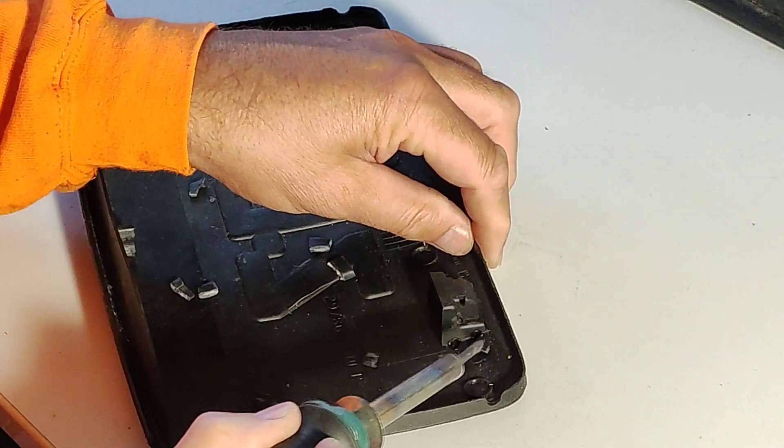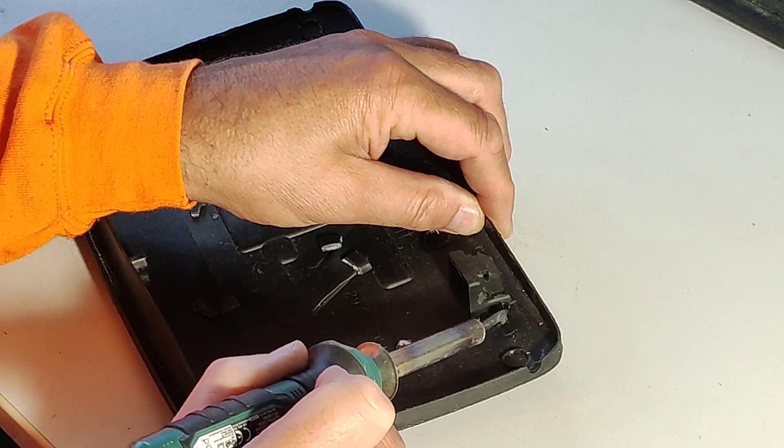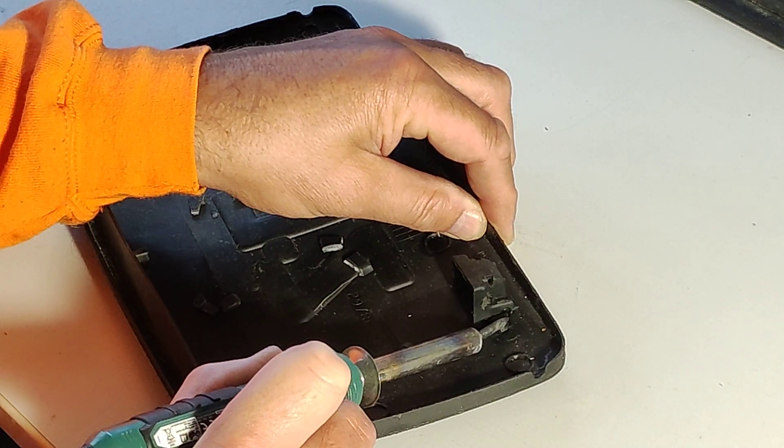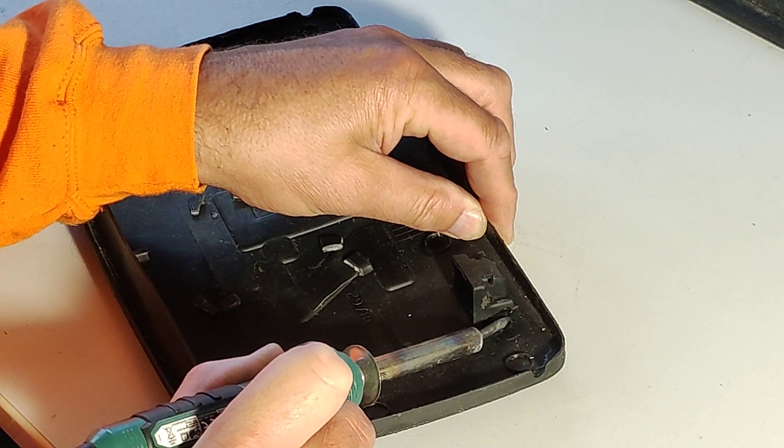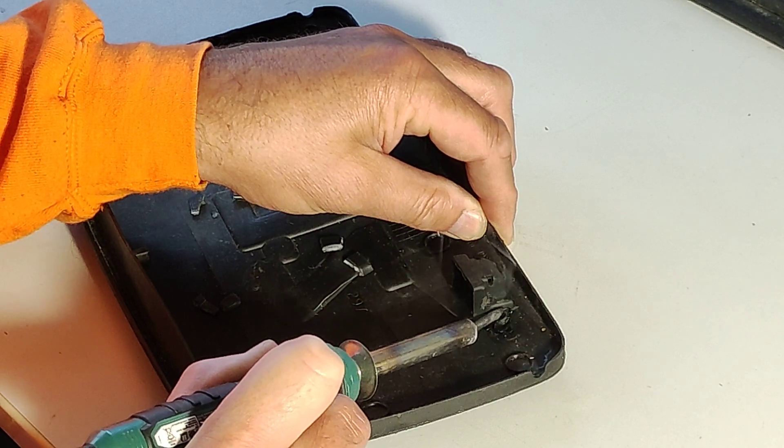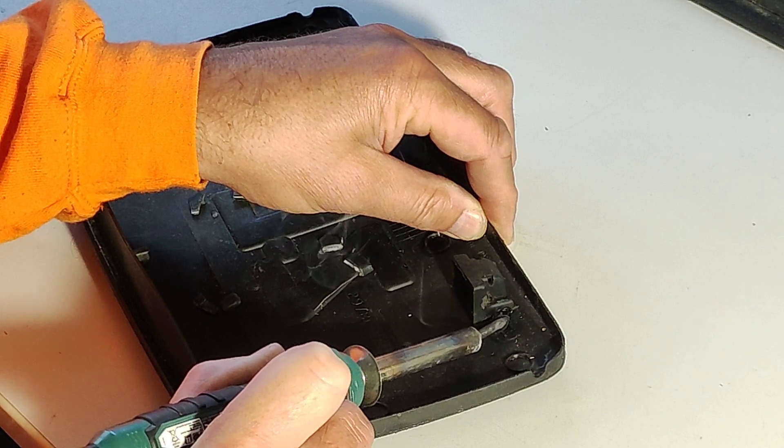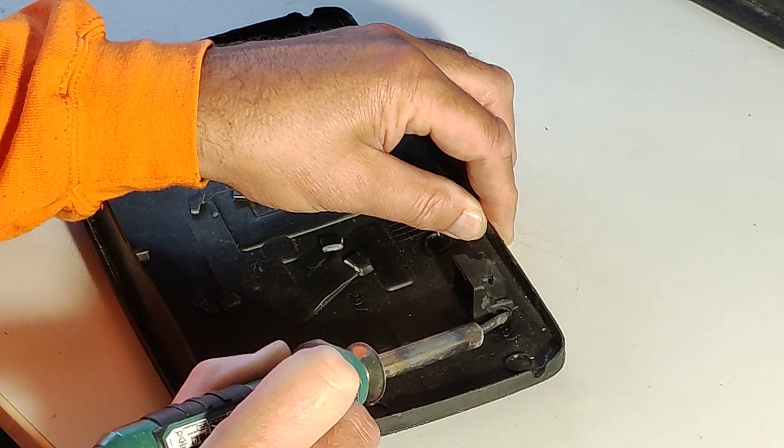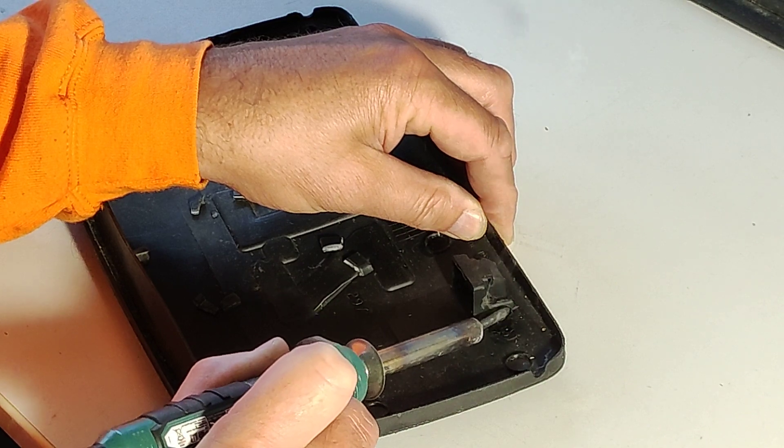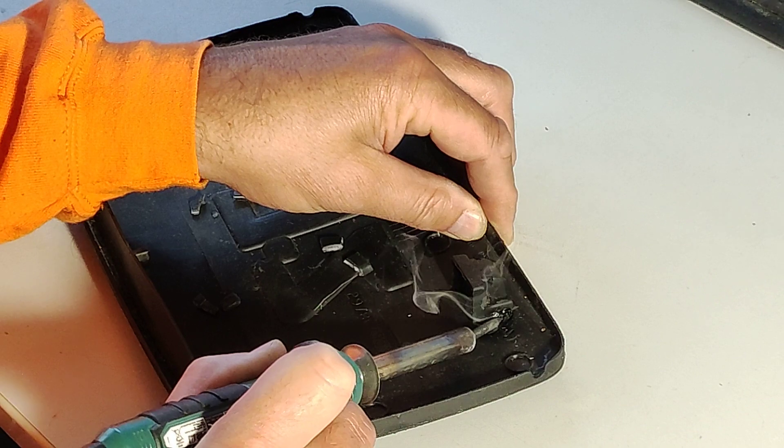So in the moment, we take plastic here and begin to melt it. You see it gets very liquid. And now you have to take the soldering iron and put it into the flap a little bit, so half a millimeter.